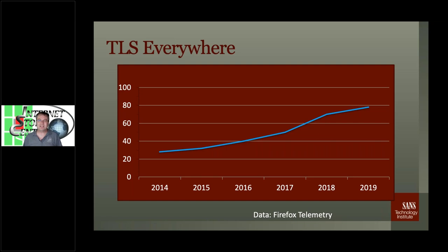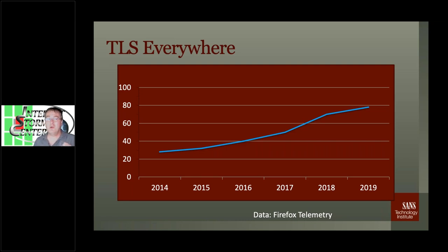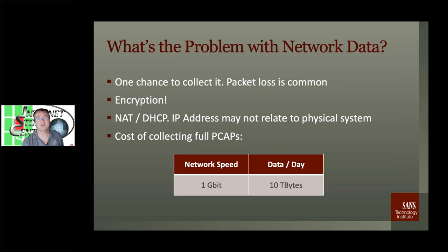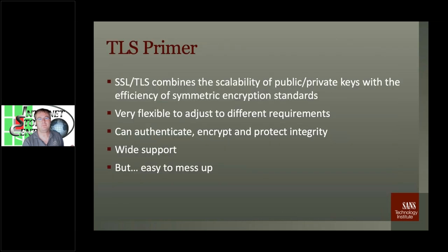Even for non-web traffic like email, Facebook published numbers showing about 80% of the email they send goes to mail servers that support STARTTLS, so it's encrypted. We no longer see that traffic. It's actually a little bit worse than that — in the US, Firefox telemetry shows about 90% of traffic encrypted. So your network may actually be worse than the 80% global average.